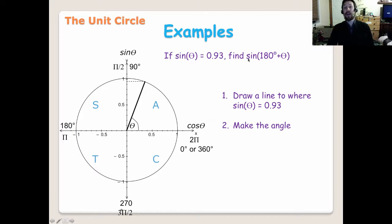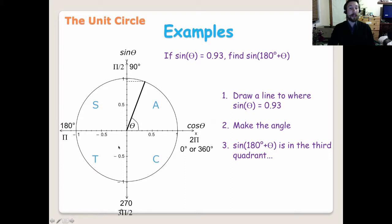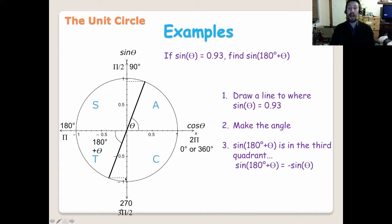Because the next part of the question says: find sine of 180 plus that angle. So what we need to do is actually go to 180 degrees, which is all the way around to here, and then we need to add that same angle. So of course we end up getting a line that is going to be in the third quadrant. And as you can see here, our angle is 180 plus theta. Now, what's that going to give us? Well, it's going to go all the way down to negative 0.93. So therefore, another way of writing this is: sine of 180 plus theta is the same as saying negative sine of theta, because it's going to be the same answer but negative. So therefore, it's negative 0.93.